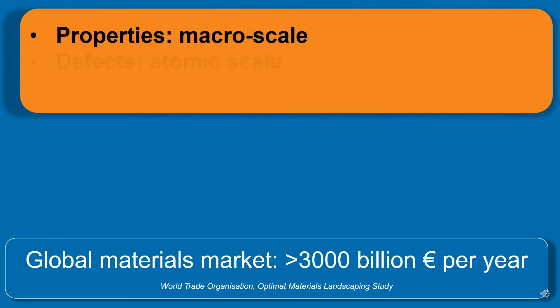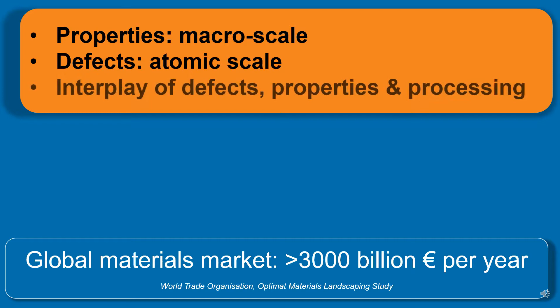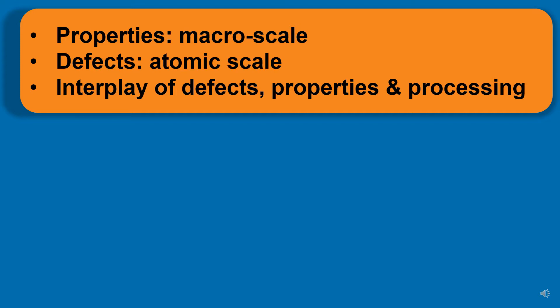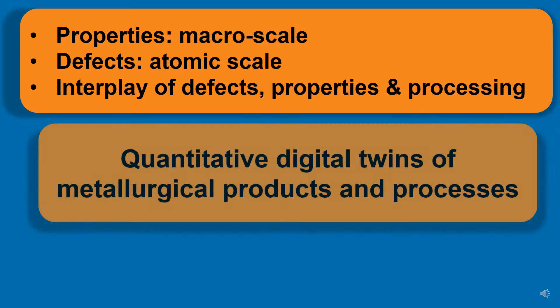Interesting is that we all know the properties of materials are requested at the macroscopic scales or at the microscopic scales when we talk about small instruments. But the defects must be studied and understood at the atomic and electronic scale. And what is really interesting is that complex interplay of defects, properties and processing. That means the assignment that we encounter here is that we want to have a quantitative digital twin of these metallurgical products and processes.